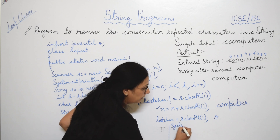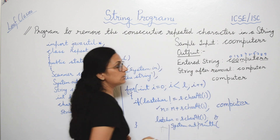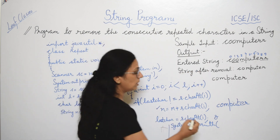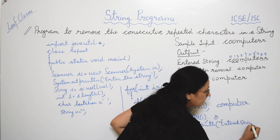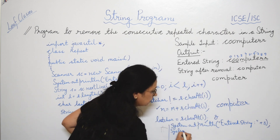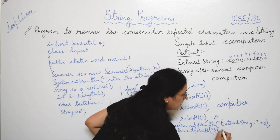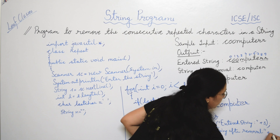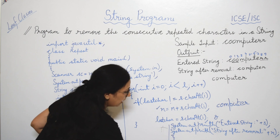After the loop, we give two display statements. System.out.println("Entered string: " + s) to print the original string, and System.out.println("String after removal: " + n) to print the new string stored in n. Then we close the main function and the class.